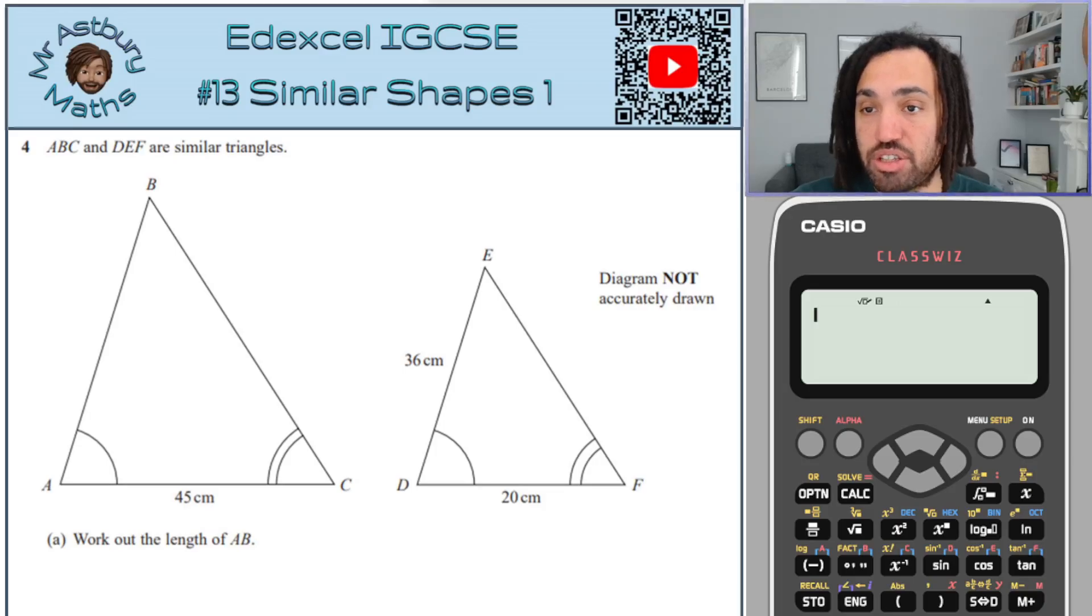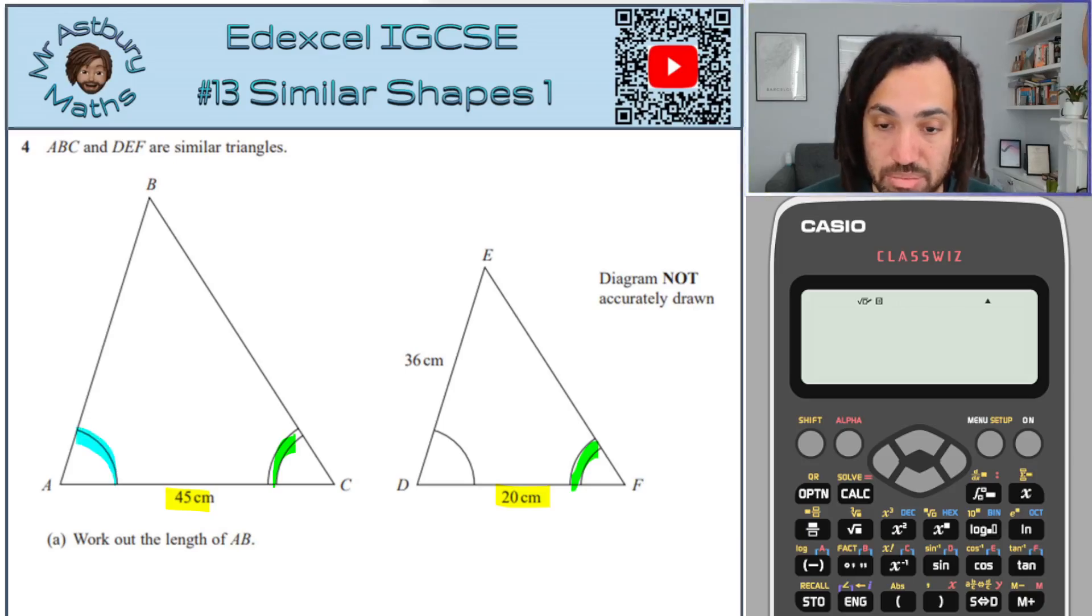Okay, so the first thing we do, let's identify two corresponding sides. So 45 and 20 are corresponding. I know that because we've got this angle here is the same as that angle there, and we also have this angle here as same as that angle there.